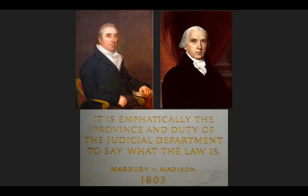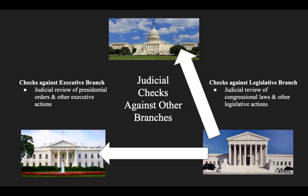Judicial review was actually created through the Marbury v. Madison of 1803 case, which said the court has a responsibility to ensure government actions are in fact constitutional. It did so in a 4-0 margin. Judicial review actually serves as a check against the other branches. So if Congress does something that is unconstitutional, or if the president does an action that might be unconstitutional, this is something the courts can do to limit that.